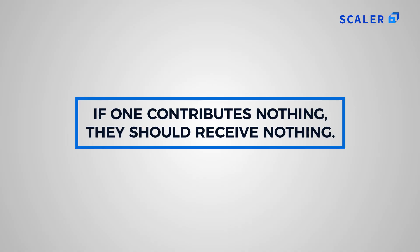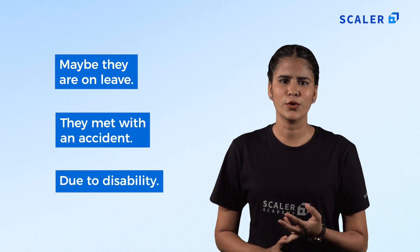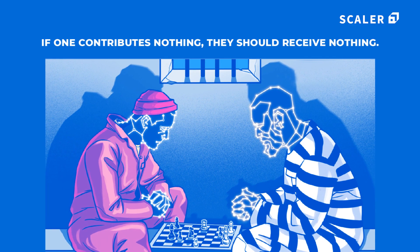Let's understand marginal contribution via an example. Assume you and some friends are baking cakes. When any of you gets sick, the group prepares two fewer cakes than on the days you were present — so your marginal contribution is two cakes per day. If one contributes nothing, they should receive nothing. For example, if you go out to dinner with a friend but haven't ordered anything, there's no need to contribute when the bill comes. Similarly, if anyone cannot contribute to the workforce, they shouldn't receive compensation. However, in cases of leave, accident, or disability, the coalition may still pay them even if they are unable to contribute.